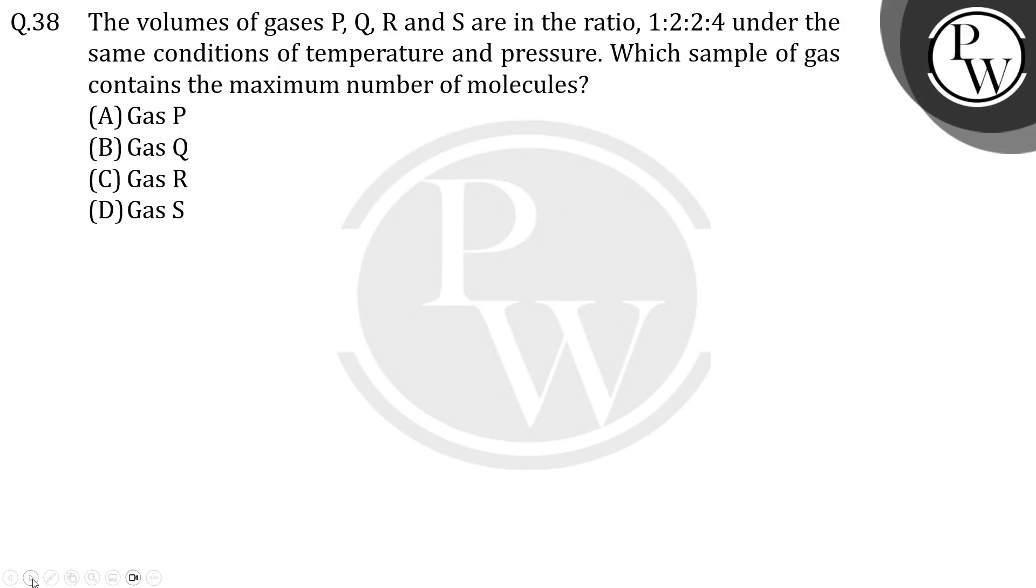Welcome students. In this question, the volumes of gases P, Q, R, and S are in the ratio 1:2:2:4 under the same conditions of temperature and pressure. Which sample of gas contains the maximum number of molecules? From the ratio, we have P, Q, R, and S as 1:2:2:4.